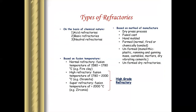On the basis of chemical nature, they are classified into three types: acidic refractories, basic refractories, and neutral refractories. We are going to see separately about these refractories with examples. Acidic materials or acidic constituents are used in the preparation of acidic refractories. Basic substances are used in basic refractories, and neutral elements or neutral constituents are considered in the case of neutral refractories.